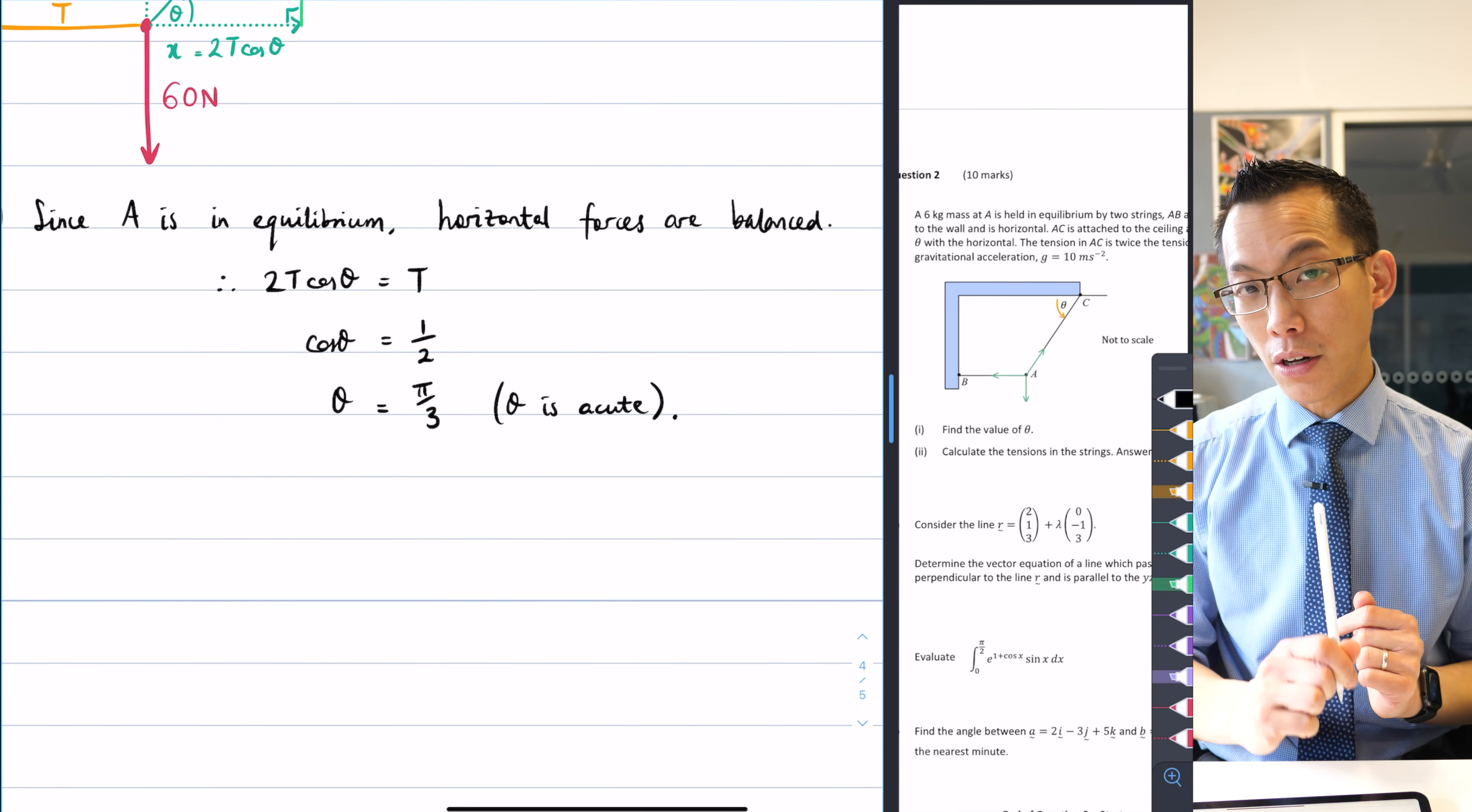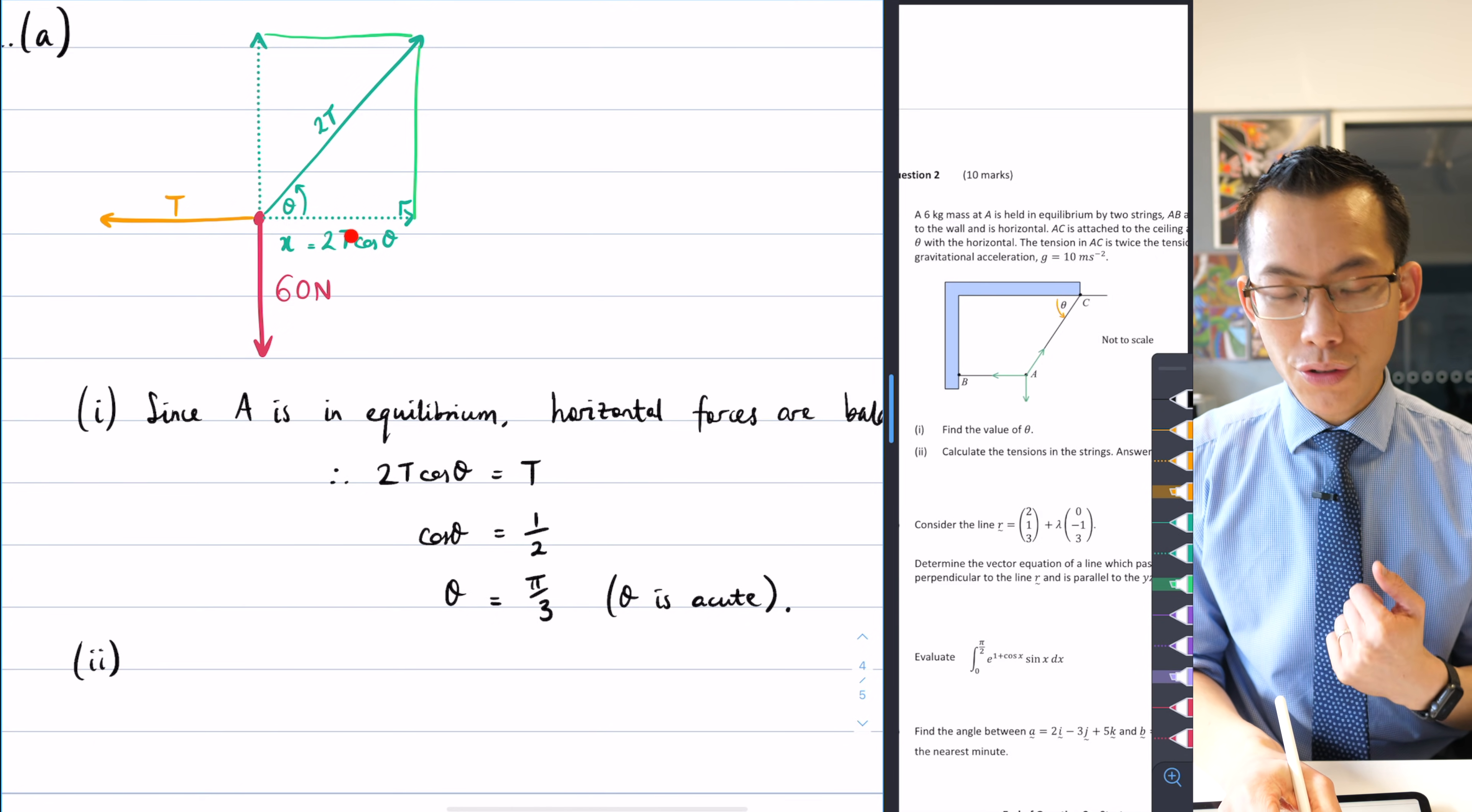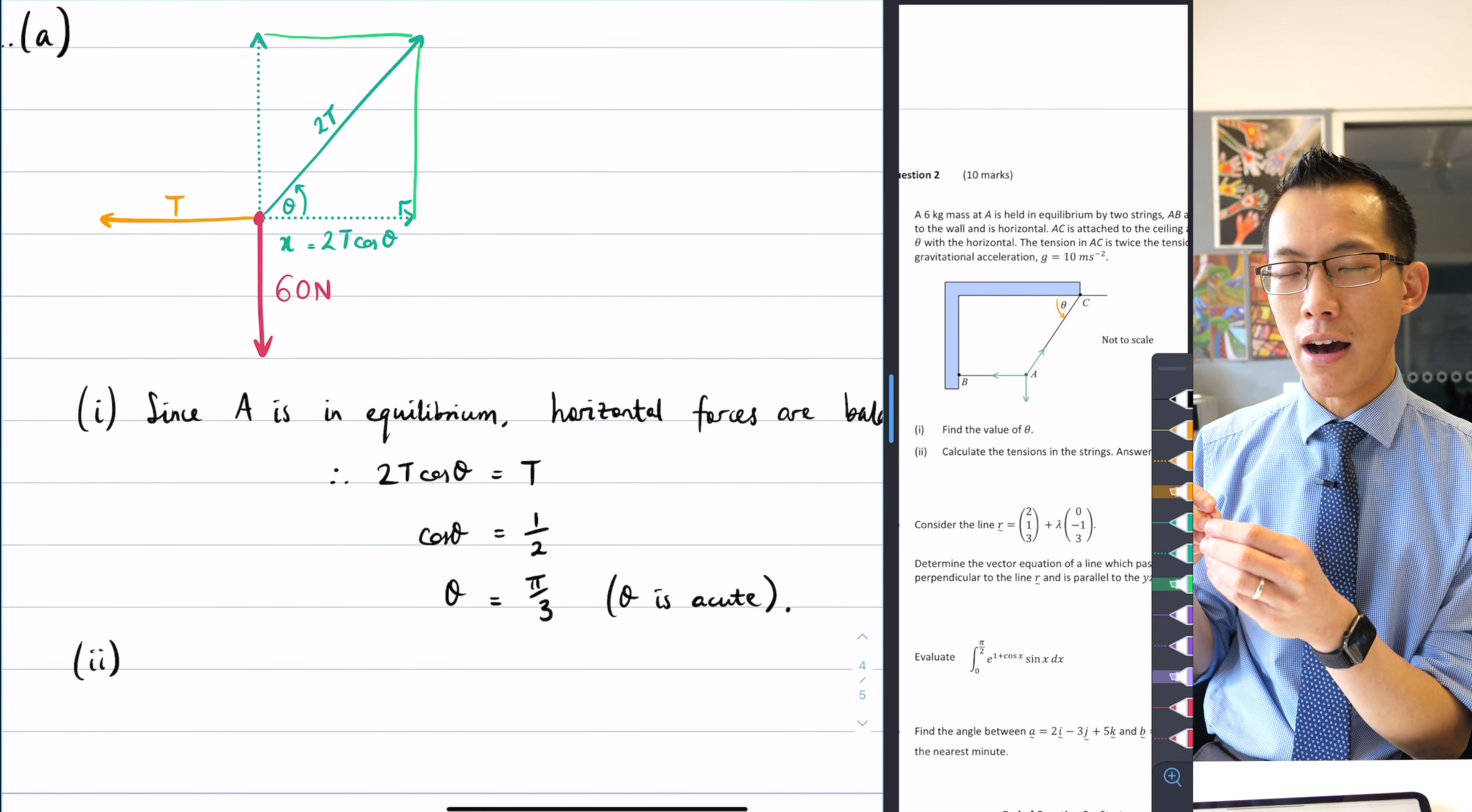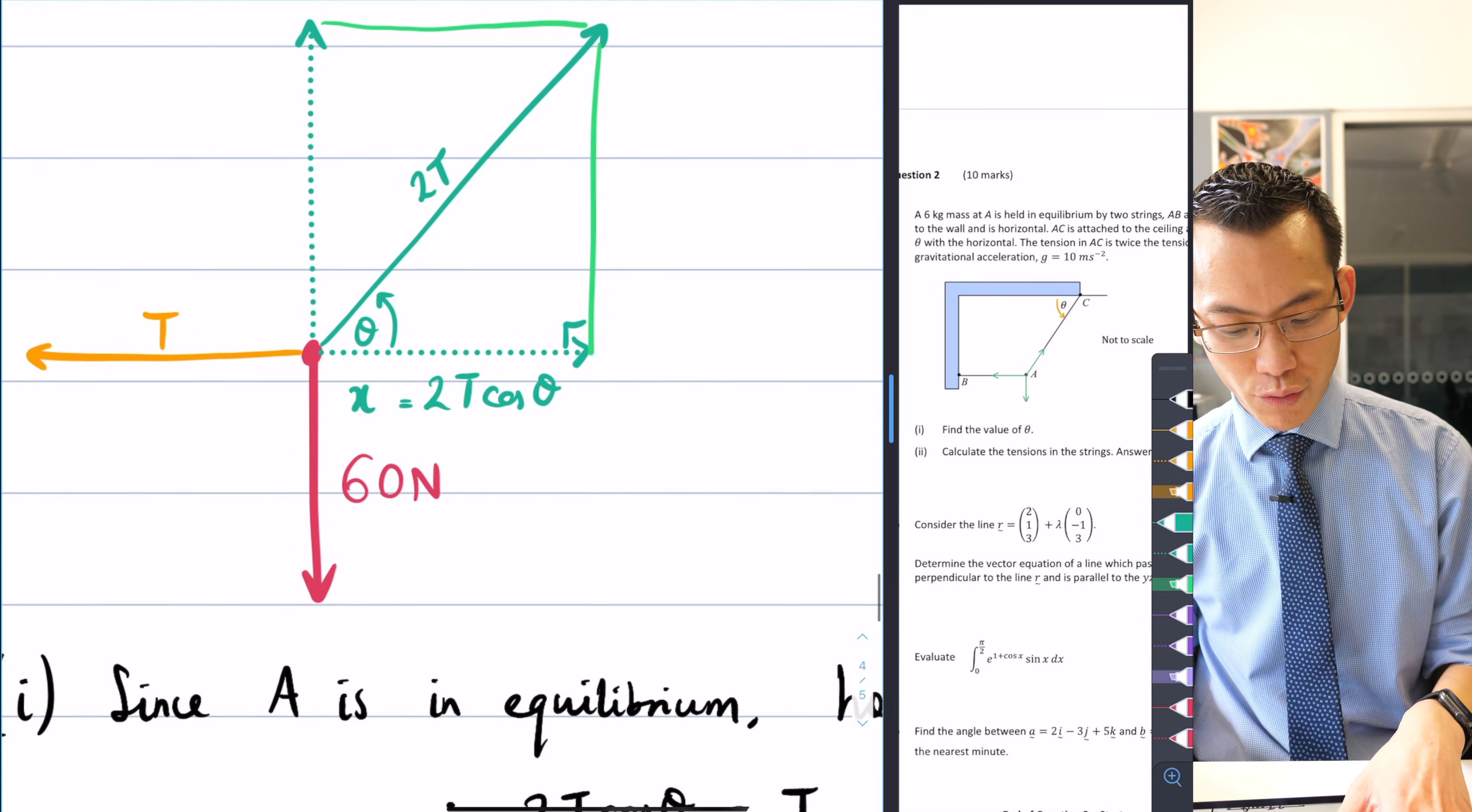I'm trying to now evaluate what the tensions in the strings are. As I've just used the horizontal forces, what they've done is, because the horizontal forces both have t in them, they cancel. I'm going to need to appeal to other knowledge to work out what t is. I need something which I can equate which doesn't eliminate t once I write the equation together. I've already done the horizontal resolution of forces, I'm now going to do the vertical resolution of forces.